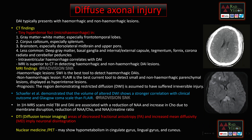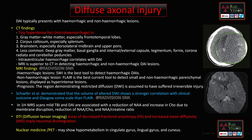Coming to diffuse axonal injury: typical CT findings are tiny hyperdense foci at the gray-white matter junction and in the corpus callosum, which may show restricted diffusion on DWI and low ADC values. The corpus callosum — especially the splenium — is typically involved, followed by the brainstem. Intraventricular hemorrhage also correlates with DAI. MRI is superior to CT in detecting both hemorrhagic and non-hemorrhagic DAI lesions. GRE/SWI is the best tool to detect hemorrhagic DAI, and FLAIR is best for detecting non-hemorrhagic parenchymal lesions. Schaffer et al. demonstrated that the volume of altered DWI shows a stronger correlation with clinical outcome and Glasgow Coma Scale than FLAIR.